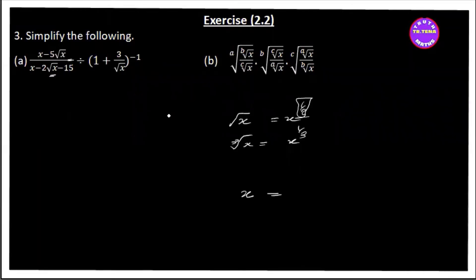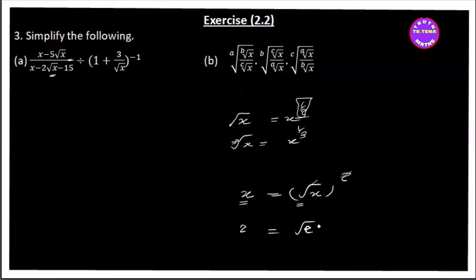Now, if you want to understand the concept of root of root, consider this: √x whole squared. For example, √2 whole squared equals 2, and √5 whole squared equals 5. So the root of the whole square gives back the original number. We solve this problem using root of the whole square.